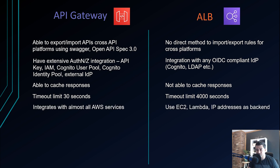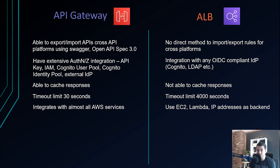API Gateway integrates with almost all AWS services — in the API Gateway console, clicking the backend integration shows a wide variety of AWS services. ALB, on the other hand, integrates with EC2 instances, Lambda functions, and IP addresses as backends, and cannot directly integrate with all the different services that API Gateway can.